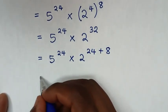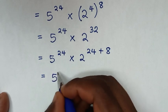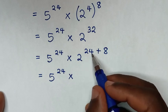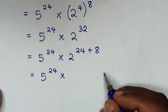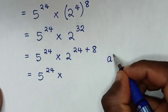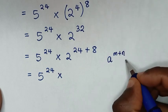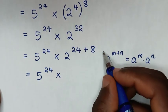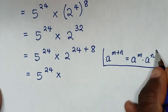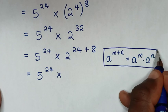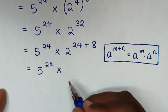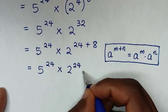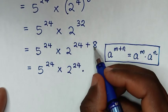In the next step, it will be equal to 5 power of 24, then times 2 power of 24 plus 8. This is in the form of a power of m plus n, which equals a power of m times a power of n. So here, it becomes 2 power of 24, then times 2 power of 8.